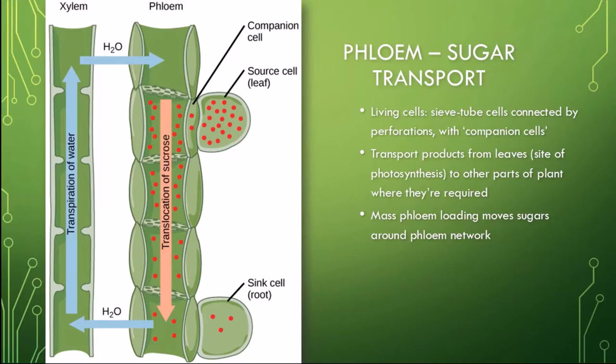The sugars and other nutrients are released or unloaded at their sinks, for example, the roots or developing flower. The unloading process can be active, such as through the use of sugar transporters, or passive via diffusion.